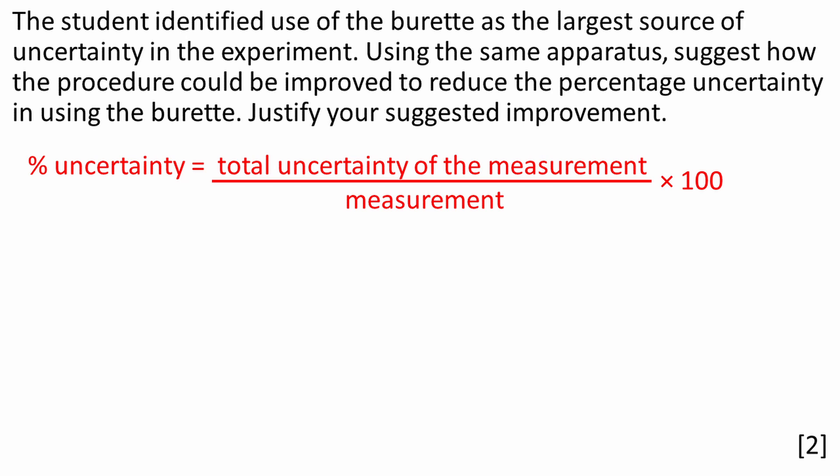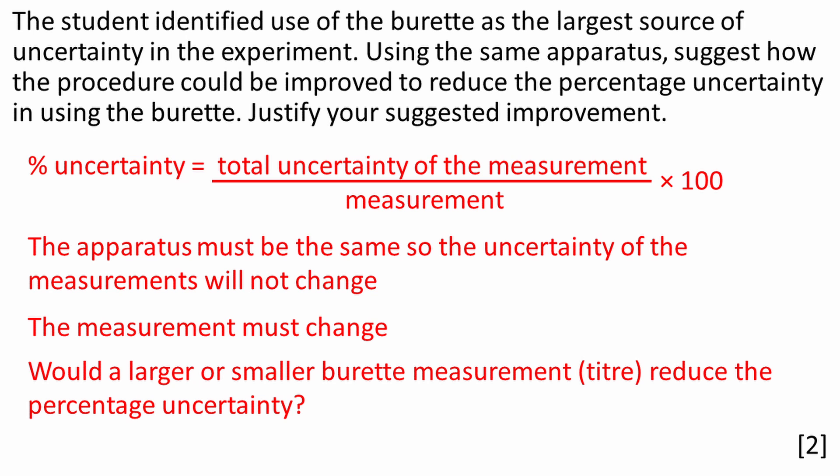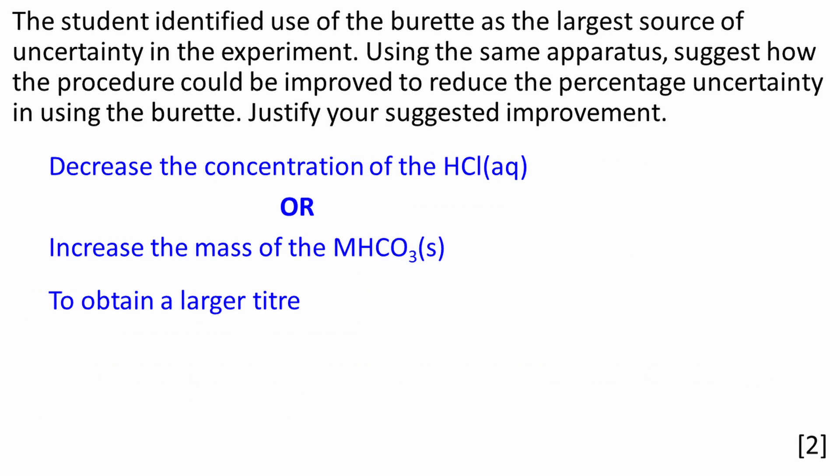When asked about percentage uncertainty in exam questions, always try to relate your answer to the mathematical expression shown here. The apparatus must be the same so the uncertainty of the measurements will not change. The measurement must change. Think, would a larger or smaller burette measurement reduce the percentage uncertainty? You can choose either of these options: decrease the concentration of HCl or increase the mass of MHCO3. Both of these changes would lead to a larger titer and reduce the percentage uncertainty of the burette reading.